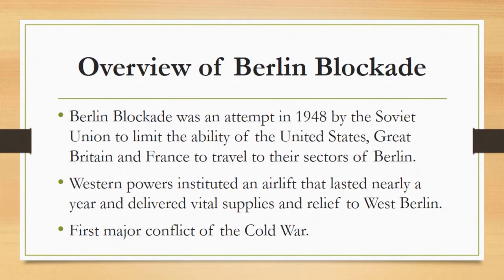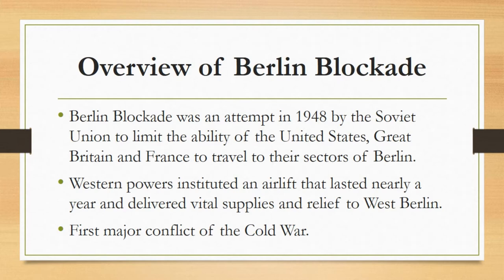First of all, an overview of the Berlin Blockade. The Berlin Blockade was an attempt in 1948 by the Soviet Union to limit the ability of the United States, Great Britain and France to travel to their sectors of Berlin, which lay within Russian-occupied East Germany. The Soviets blocked all rail, roads and canal access to the western zones of Berlin. Suddenly, some 2.5 million civilians had no access to food, medicines, fuel, electricity and other basic goods. Eventually, the Western powers instituted an airlift that lasted nearly a year and delivered vital supplies and relief to West Berlin. The Berlin Blockade and the Allied response in the form of the Berlin Airlift represented the first major conflict of the Cold War.